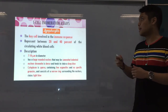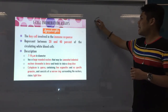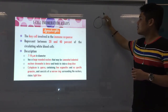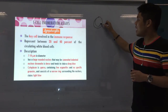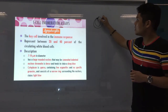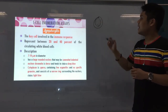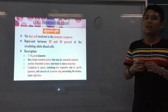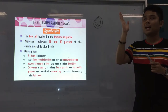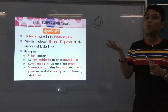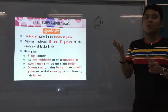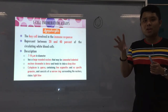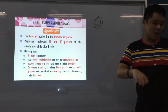The cytoplasm is sparse with few organelles and no specific granules. It consists of a narrow ring surrounding the nucleus and stains light blue. Usually, the nucleus is quite large — it occupies about three-fourths of the cell.